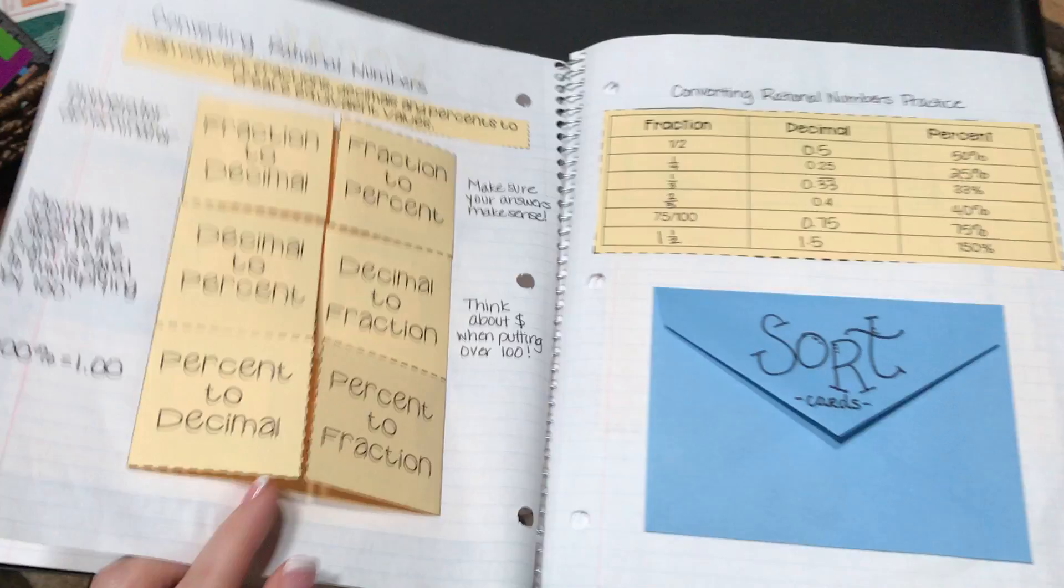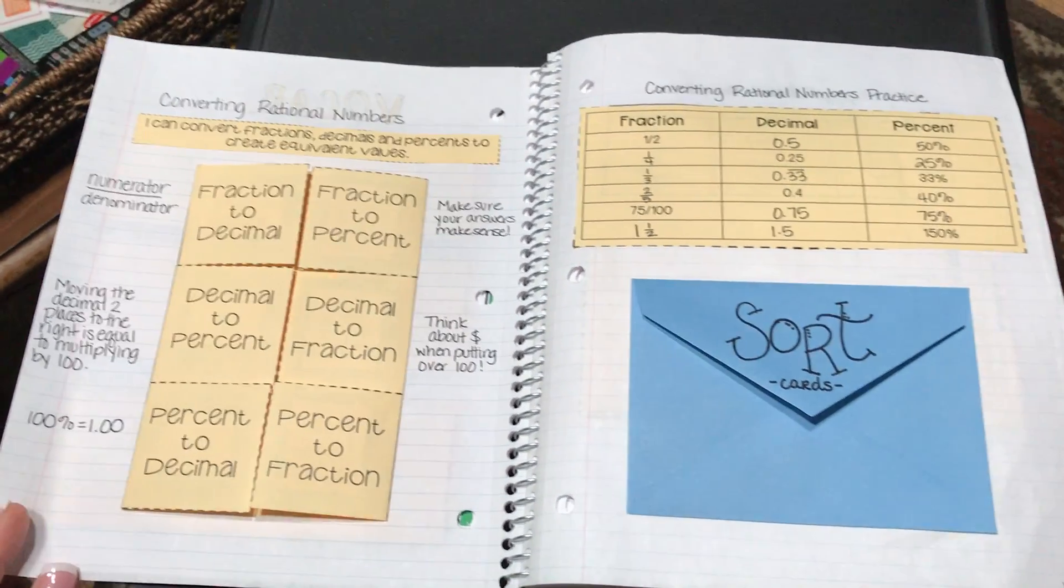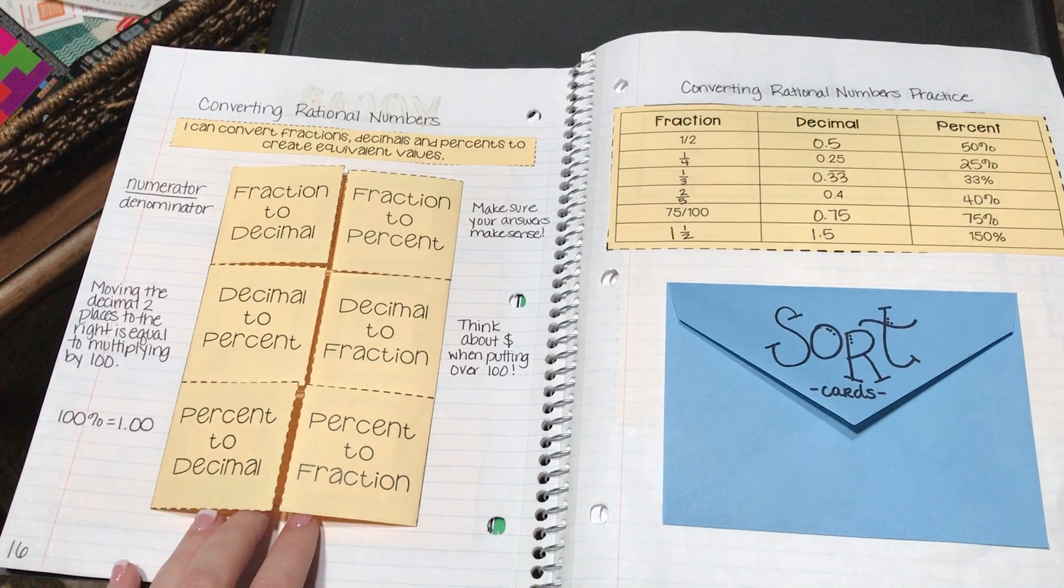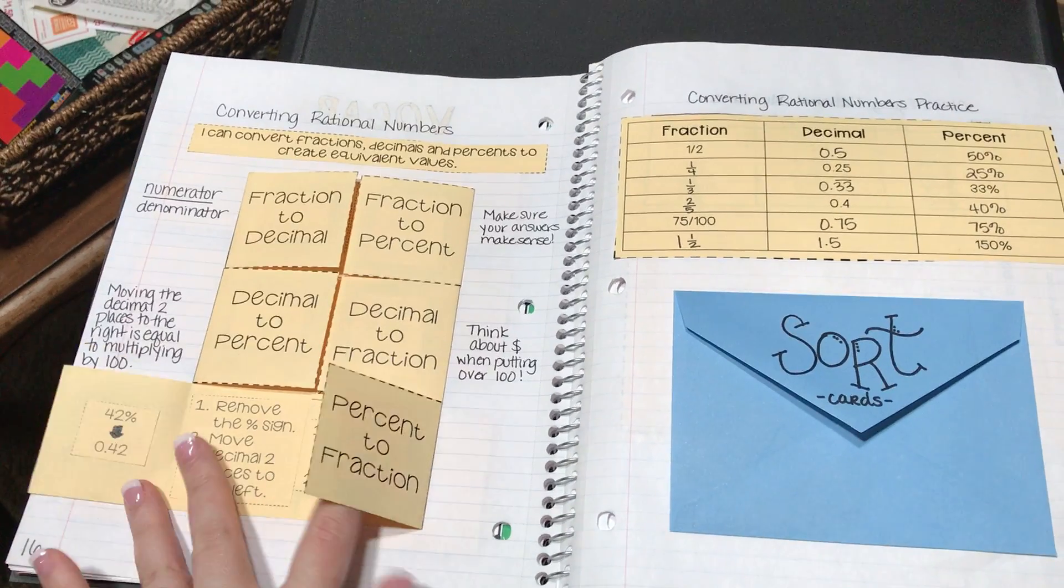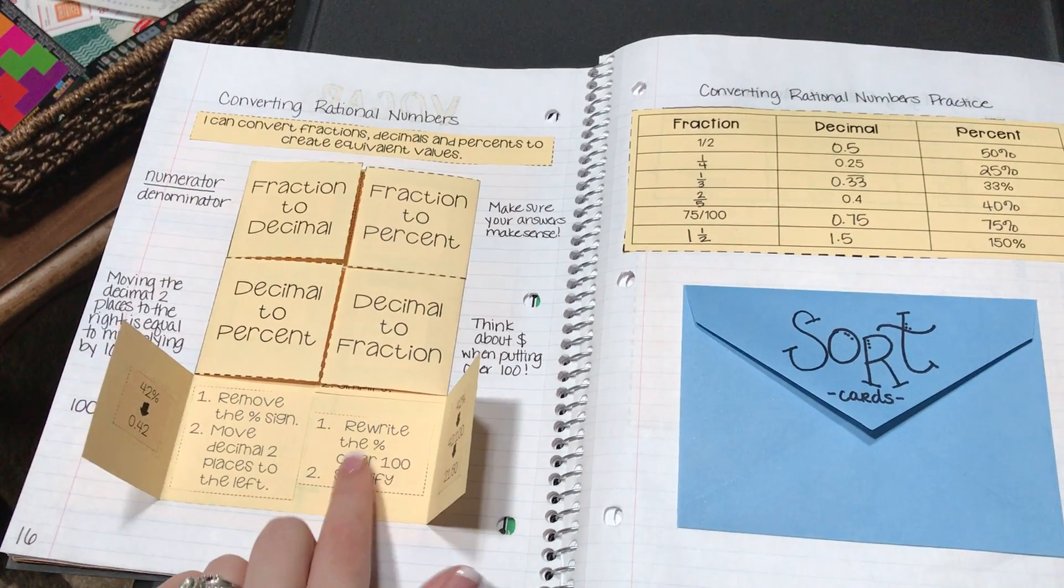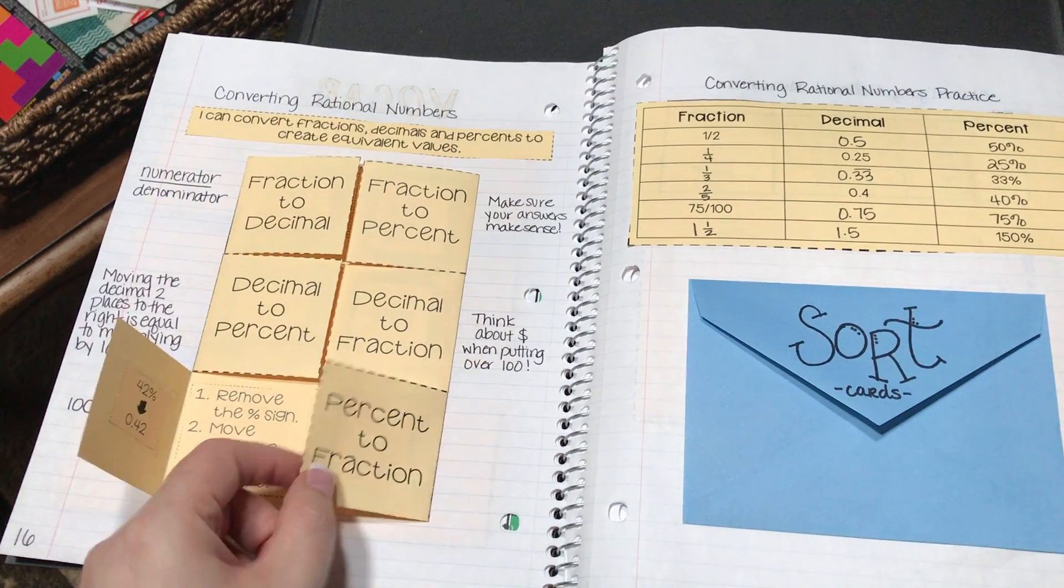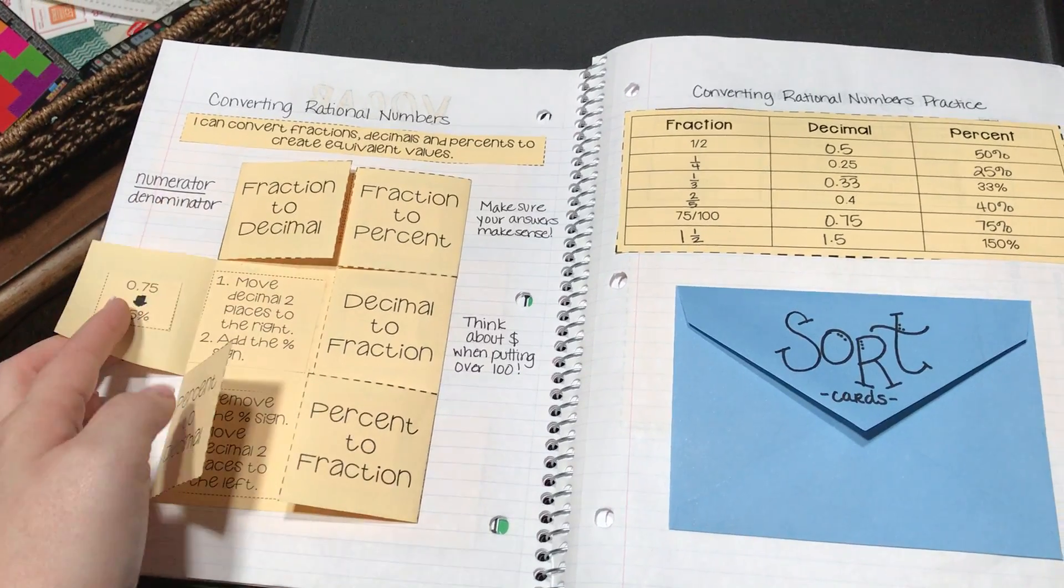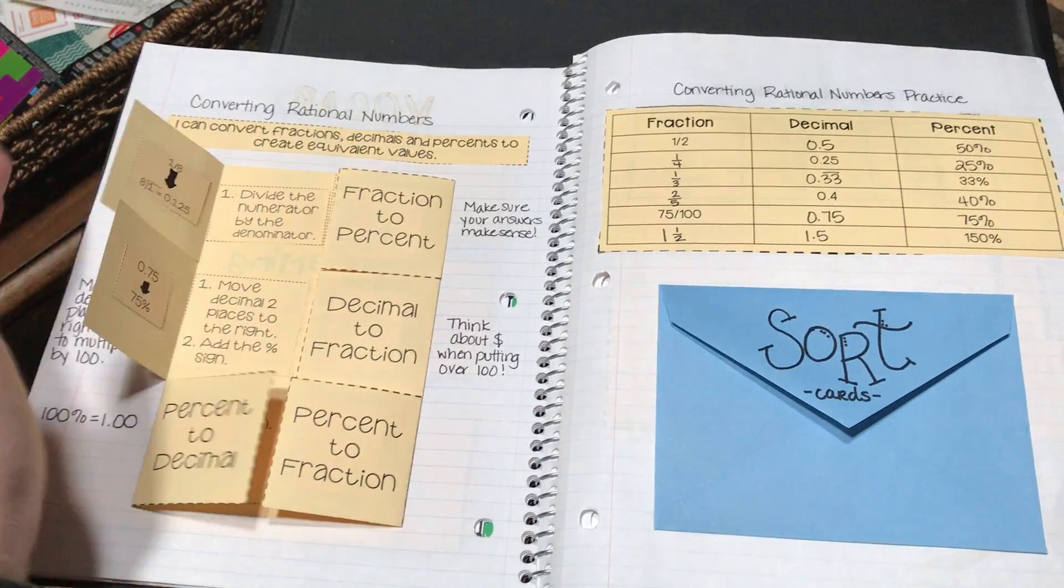The first lesson in this unit is one that I have done for quite some time now and it's converting rational numbers. You'll see the six flap shutter fold over here and underneath each one of them the students have to cut and glue down the steps to do that conversion as well as the example that goes along with it.